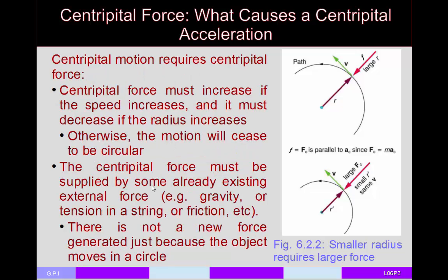This centripetal force has to be supplied by some already existing external force. For planets in orbit it is supplied by gravity. For a ball at the end of a string like a tether ball, this force is due to tension. For a roller coaster it may be a combination of gravity and the normal force between the coaster and the tracks. For a car going around a corner it's caused by friction. In all these cases there's not a new force called the centripetal force — some force that is already present acts to keep the object in circular motion.